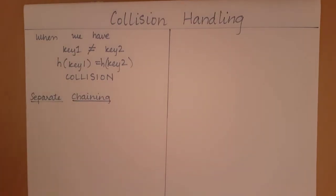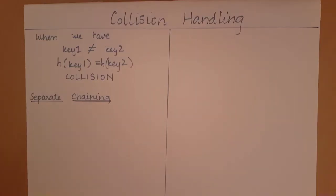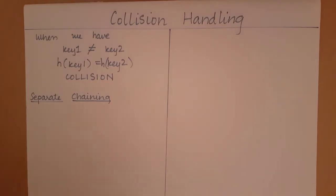So, in this method, what we are going to do is: if two keys hash to the same hash value, then in the bucket array, for that particular hash value index, we will create a linked list. Let's take an example to explain.